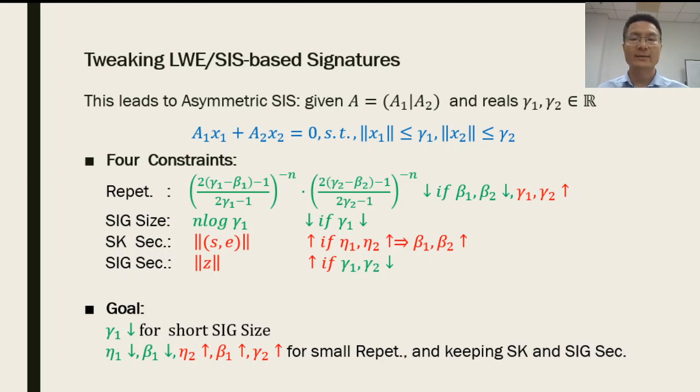This finally allows us to choose a very small gamma1 for short signatures, and appropriately choose other parameters to maintain the other features.